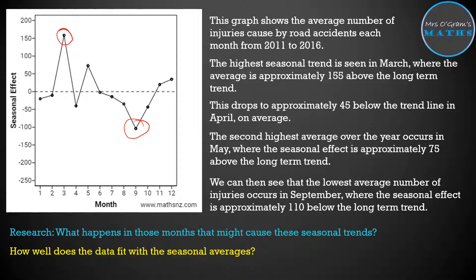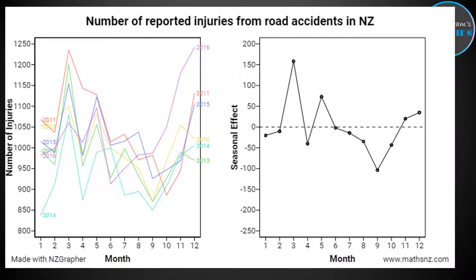Then you want to take a look at how well the data fits with the seasonal averages. We've got a graph of averages, but we want to look back at the original graph and see just how well it actually fits. Comparing the two graphs, we can talk about whether the seasonal average is a good model or whether there's quite a lot of variation in our data. We'll put these two graphs side by side and compare what's happened on the actual data on the left with the averages used to model those seasonal effects on the right.